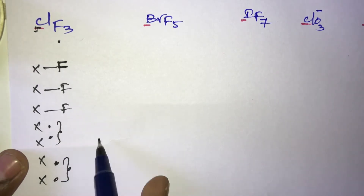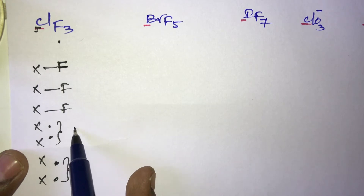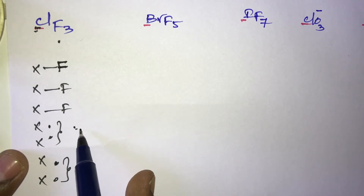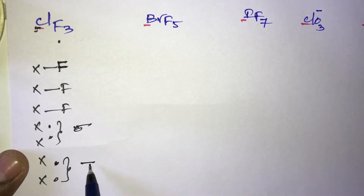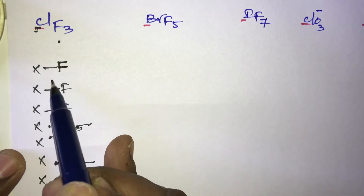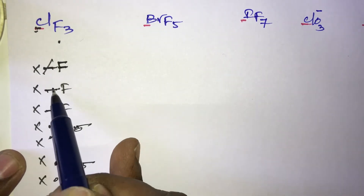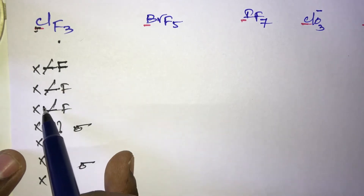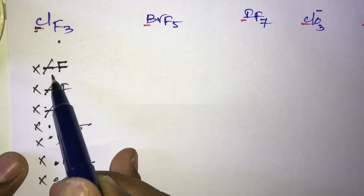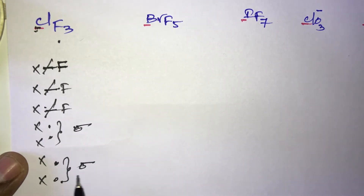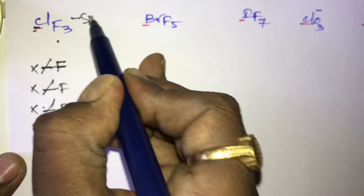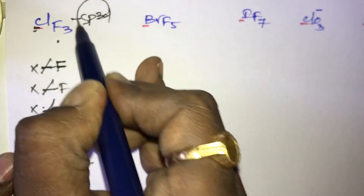There are two lone pairs. Each lone pair is considered as one sigma bond. The three single bonds give three sigma bonds, and the two lone pairs contribute two more sigma bonds. So total sigma bonds = 3 + 2 = 5. Five sigma bonds means the hybridization is sp³d.